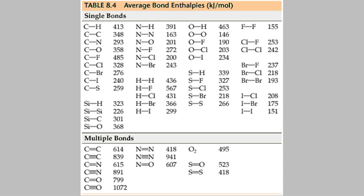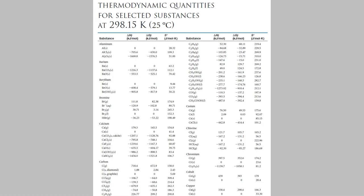On the other hand, the enthalpies in Appendix C aren't averages. Each one is the exact enthalpy for that particular compound. So the enthalpy you get by using Appendix C is much more accurate than the one that you get using bond enthalpies.